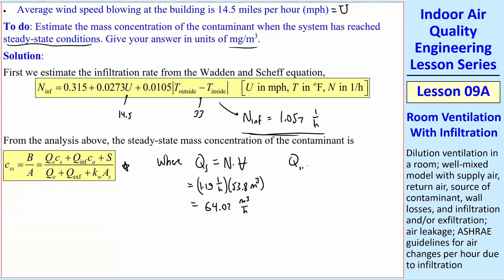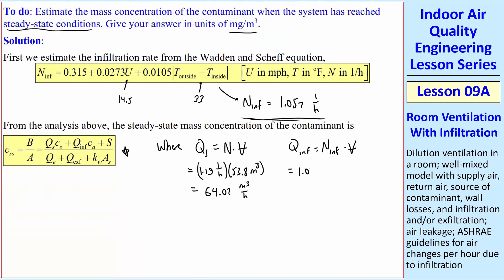And then Q infiltration is N infiltration times V, 1.057, one over hours, times 53.8 meter cubed. And that becomes 56.57 meter cubed per hour.